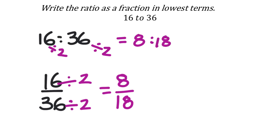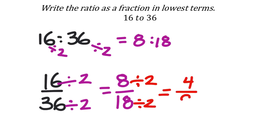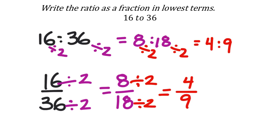Both 8 and 18 are even, so we can further simplify by 2, giving us 4 to 9. This works with the ratio notation as well — it doesn't matter which format you use; you'll come up with the same ratio. This would be 4 to 9, or as a fraction, four-ninths.